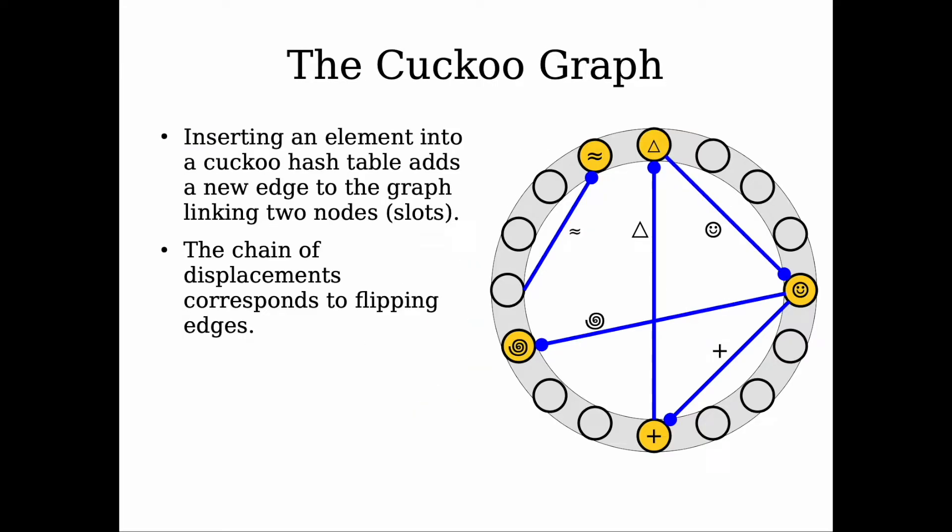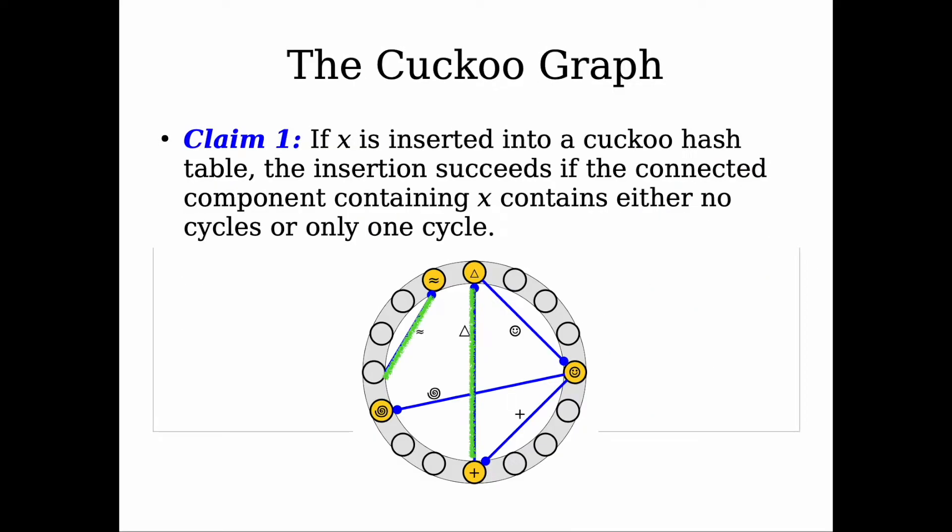Now that we introduce the concept of the cuckoo graph, all claims related to proving whether a particular insertion displaces or an insertion is successful or not will relate to the properties of the graph. We have our first claim, and the first claim uses the graph property to know whether an insertion is successful or not. It succeeds if the connected component containing x contains either no cycles or only one cycle.